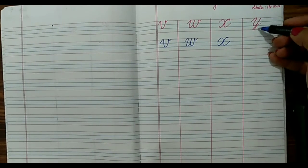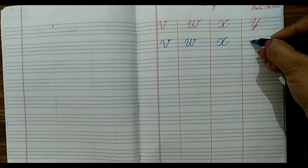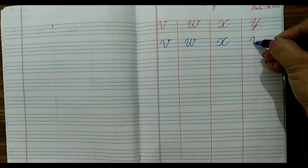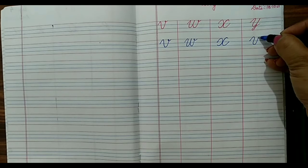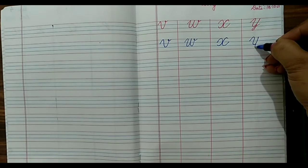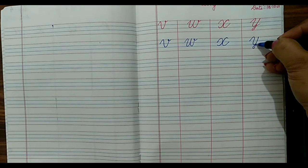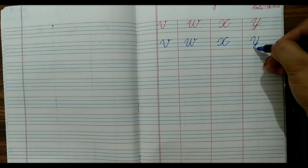For Y, as you all know, Y comes in all four lines. We will go up slanting, make a curve just like U, but you have to drag it down to the red line and make a tail.